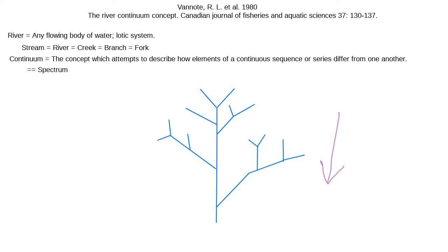We'll briefly go through stream ordering. First, we label all the first order streams. Then we label the second order streams — it takes two streams of the same magnitude joining to change stream order. So a first order stream joining another first order stream becomes a second order stream at that junction. Where a second order stream meets a first order stream, it remains a second order stream.